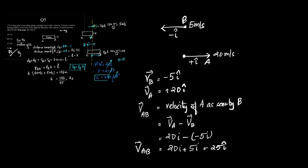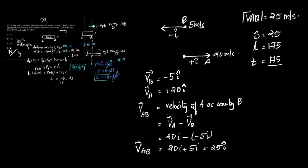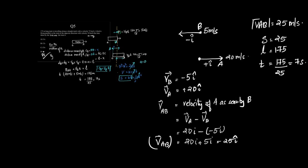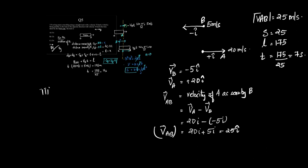If speed is 25 m/s and length is 175 m, then time = 175/25 = 7 seconds. Direct application of relative velocity: bird moves at 5 m/s, train at 20 m/s, opposite direction so angle = 180°. Relative velocity = V_A + V_B = 20 + 5 = 25 m/s. Time = 175/25 = 7 seconds.